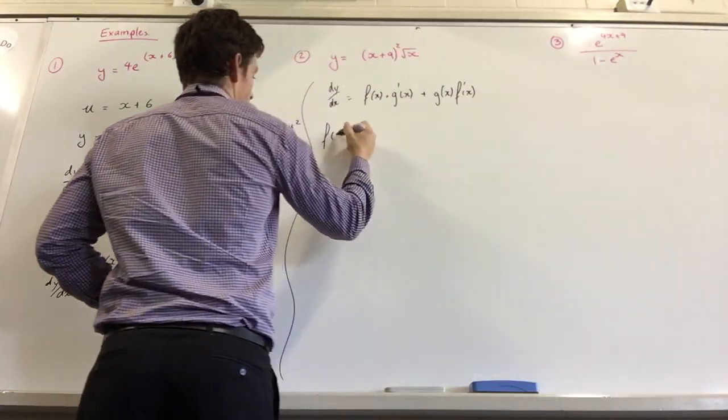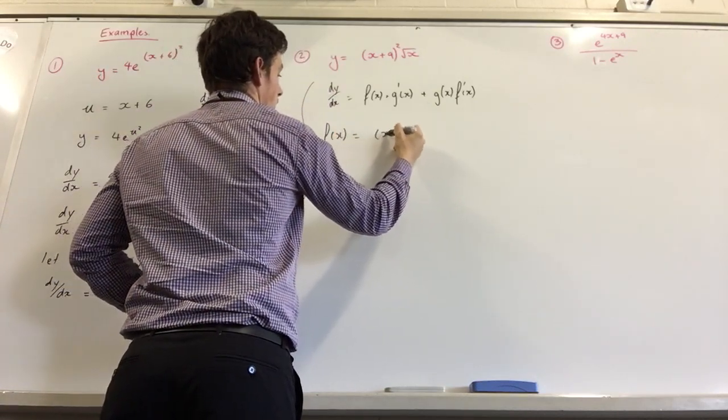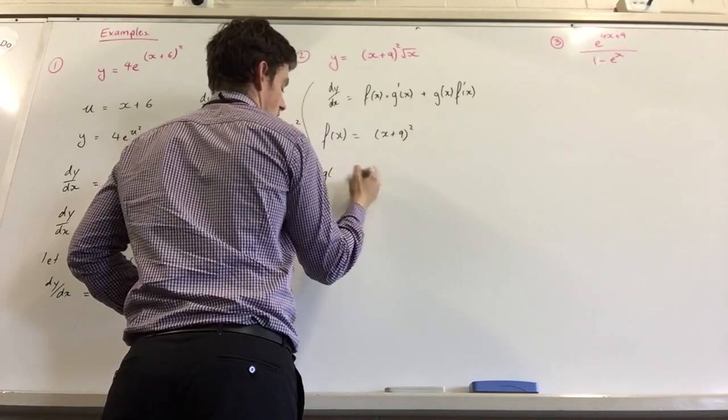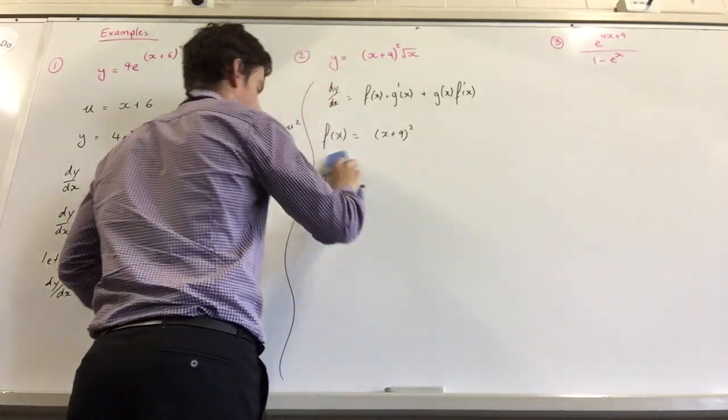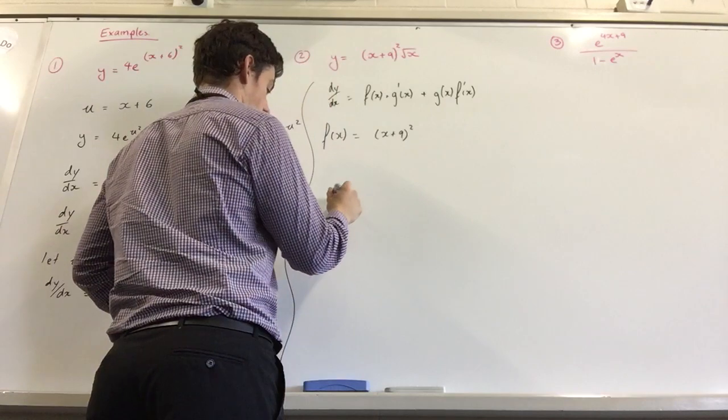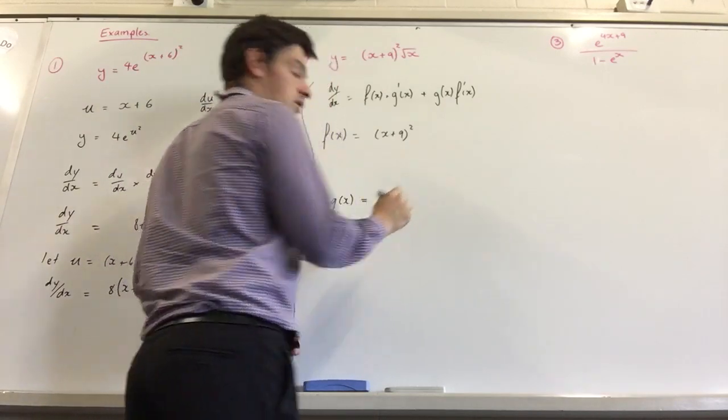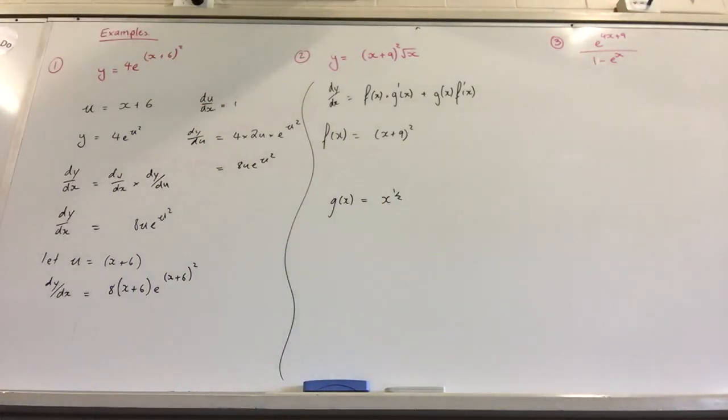So once you've written your rule out, write out what F(x) is. What's F(x)? (x plus 9) squared. What's G(x)? Square root of x. Yeah, very good. I like that you've represented that as x to the power of a half. Just get rid of that square root straight away, put it in power form and you'll be happier.